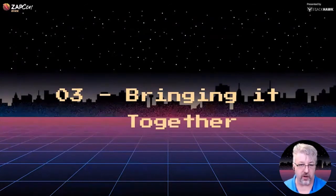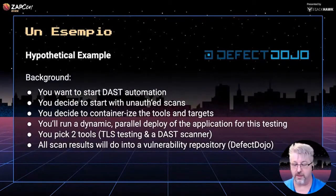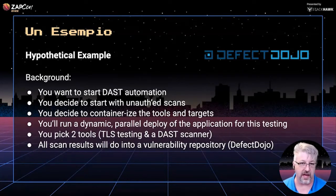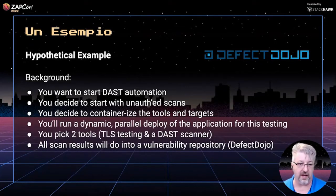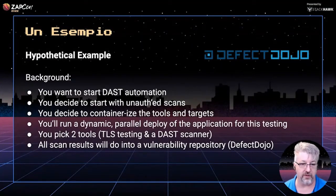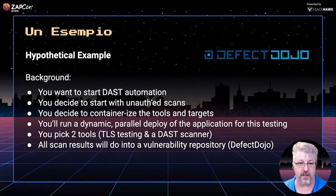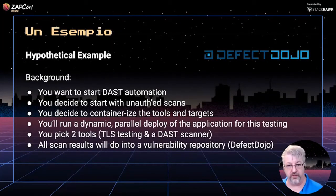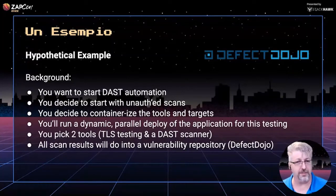We're now in our final section — we're going to hopefully bring it all together. Our hypothetical example: you've decided you want to do some DAST automation. You've decided to take an easy quick win by doing an authenticated scan. You're going to containerize the tools and the targets, so you have a nice middle ground — not quite K8s, but easy to spin up and down infrastructure. You're going to run dynamic parallel deploys of the application, parallelize the tools testing that application, and pick two tools to start with: TLS testing and a DAST scanner. All results when done will be pushed into your vulnerability repository — Defect Dojo.